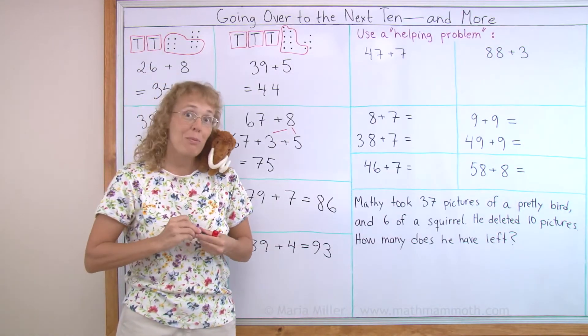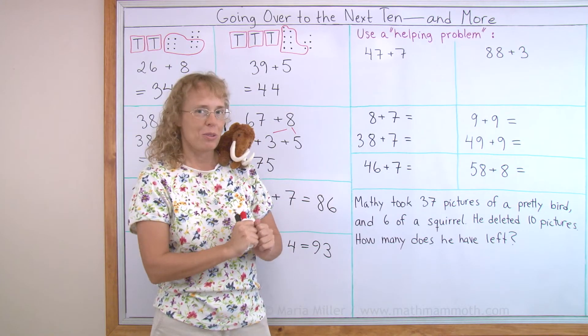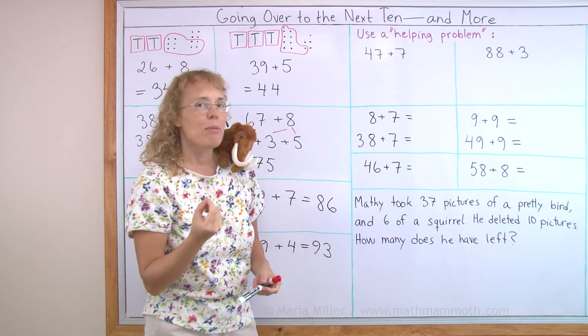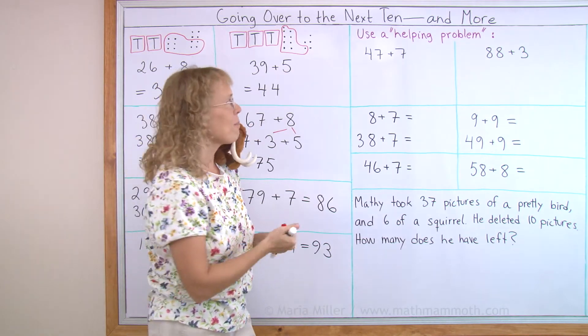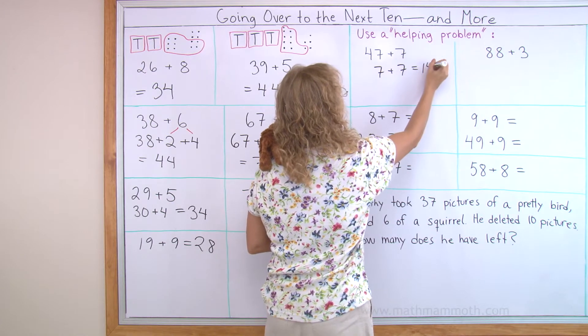And I'll show you one more way to solve these kinds of problems. We will use a helping problem, so to speak. 47 plus 7. My helping problem is 7 plus 7, and that one I already know from memory. It is 14, which is 10 and 4.